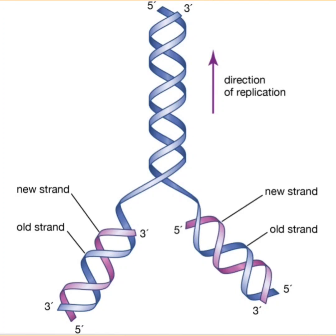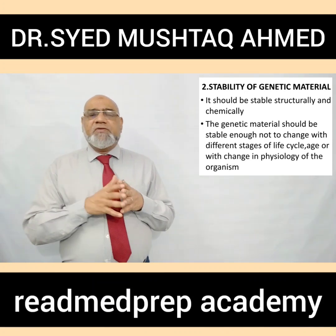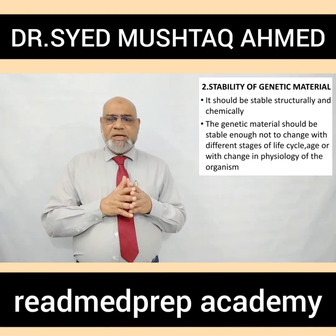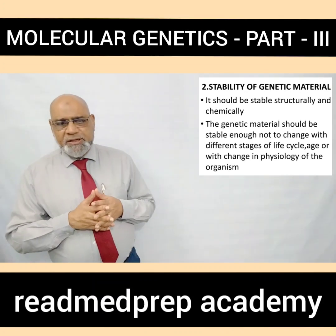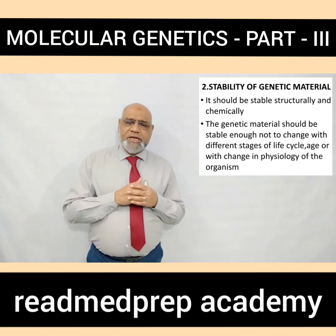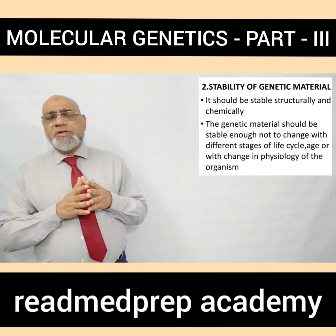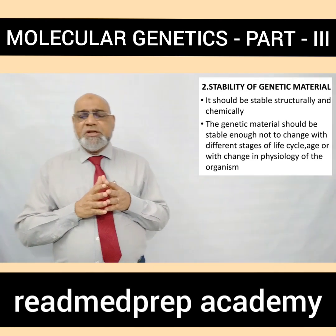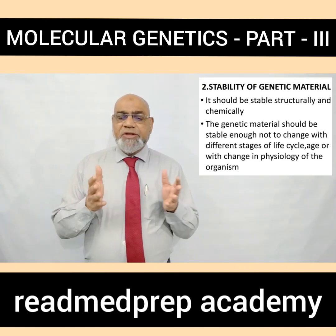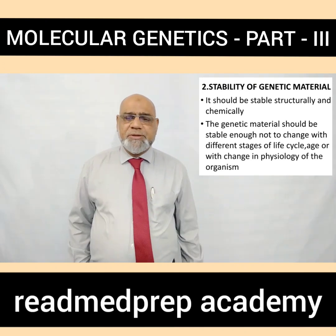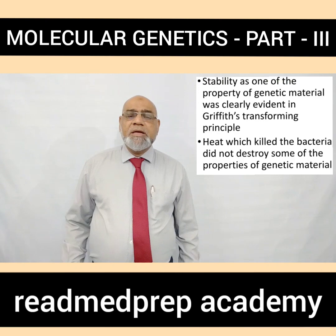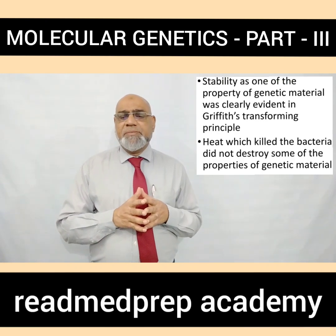A new strand is formed in the opposite direction. The genetic material should also be stable structurally and chemically. It should be stable enough not to change with different stages of the life cycle, age, or with changes in the physiology of the organism. Stability is one of the key properties of genetic material.